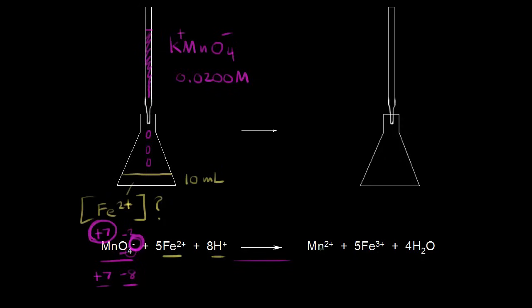In our products we're making Mn²⁺, so the oxidation state is +2. Manganese is going from an oxidation state of +7 to +2 — that's a decrease, or a reduction, in the oxidation state. Therefore manganese is being reduced in our redox reaction.